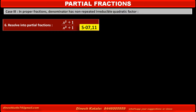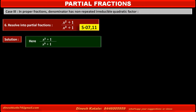Problem 4: Resolve into Partial Fractions (x² + 1) / (x³ + 1). Here the given fraction is (x² + 1) / (x³ + 1). The factors of the denominator x³ + 1 are (x + 1) into (x² - x + 1).